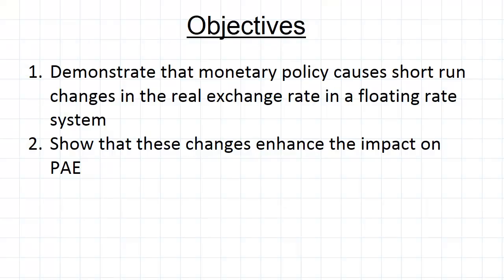We're going to go back to the effects of monetary policy, but now we're going to update it to include what we know about exchange rates. We're going to show that monetary policy actually causes short-run changes in the real exchange rate, and then we'll go on to show how this affects planned aggregate expenditure.